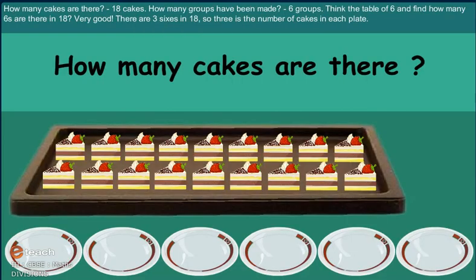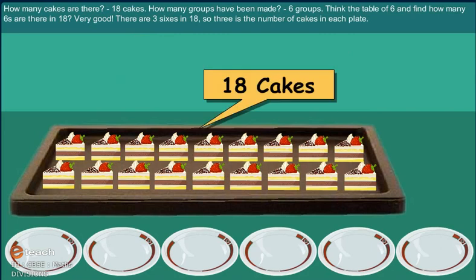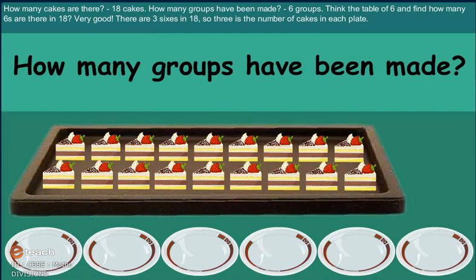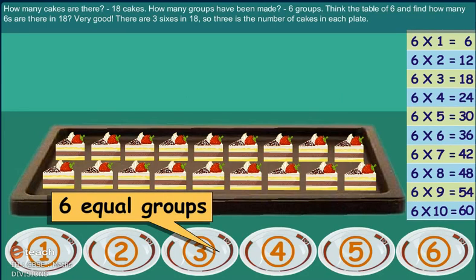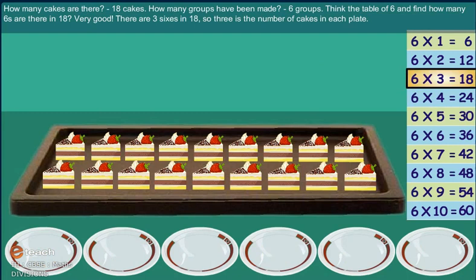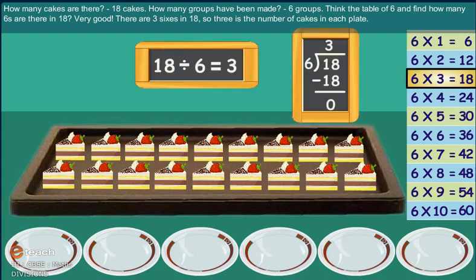How many cakes are there? 18 cakes. How many groups have we made? Think table of 6 and how many 6s are there in 18? Very good! There are 3 sixes in 18. So, 3 is the number of cakes in each plate.